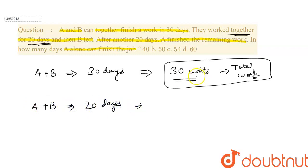Now, after 20 days, let's see - we have 30 units and 20 days worked together. Then 10 units remaining. A can complete the total work.